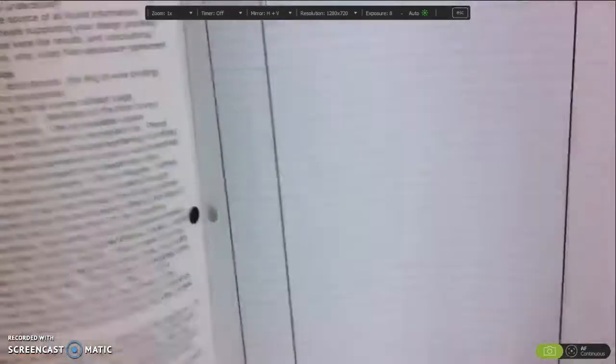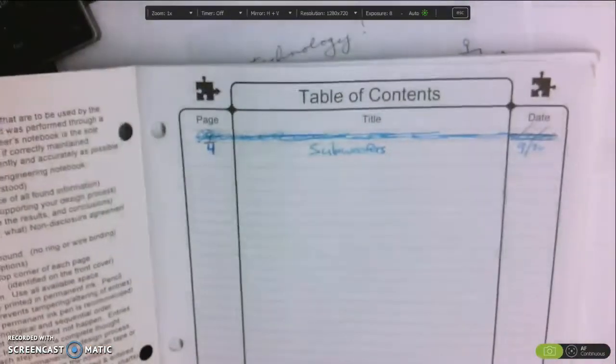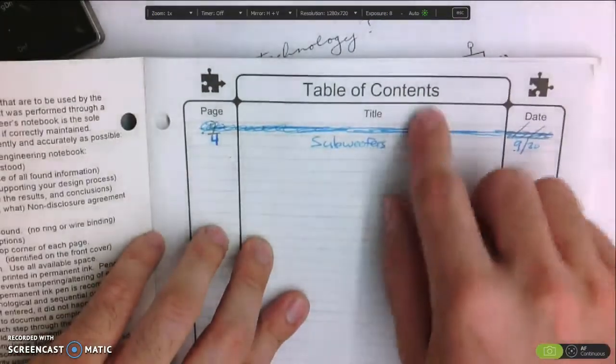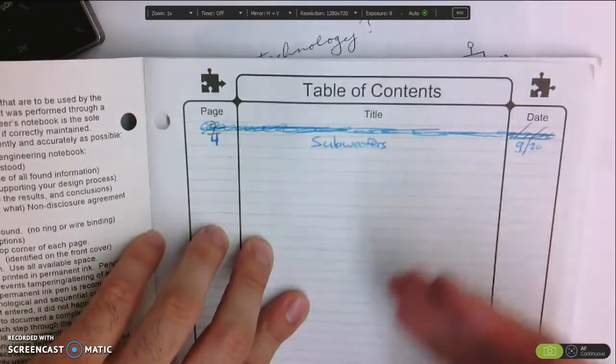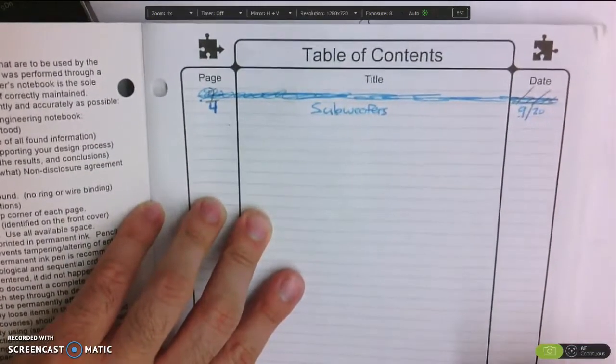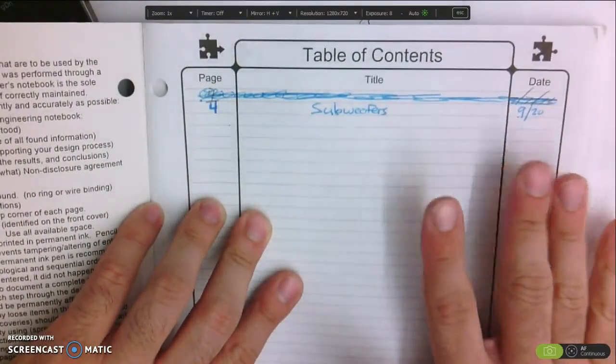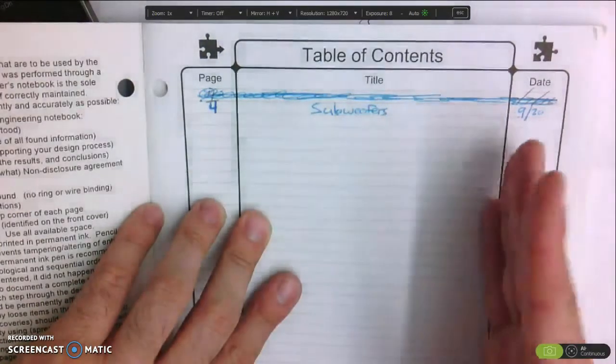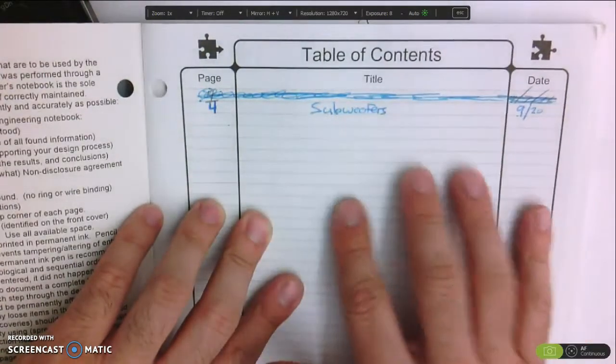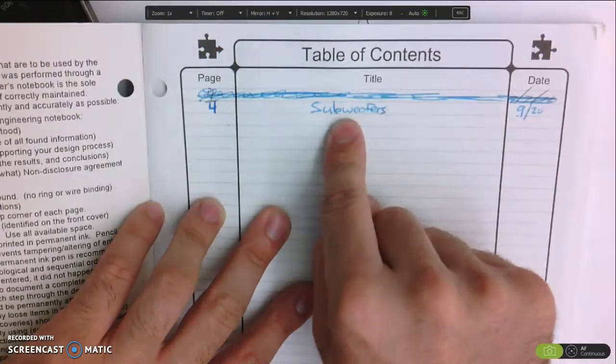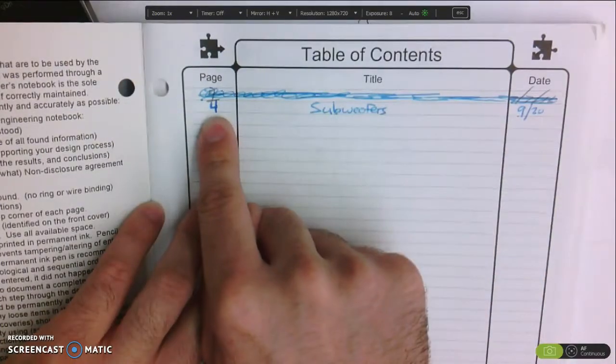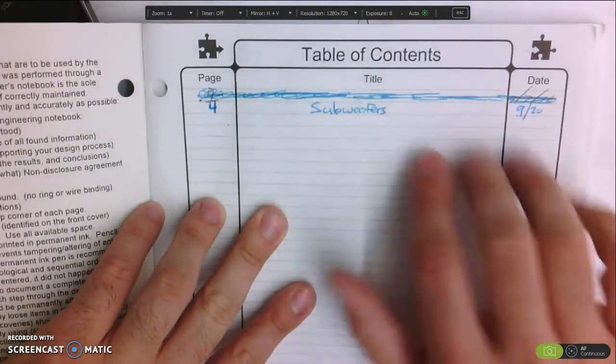The second thing you'll notice is the table of contents. The table of contents is a running tally of basically everything you're working on. As you are making notes and writing in the pages, you're going to use the title from each page and the page number as well as the date to catalog it.